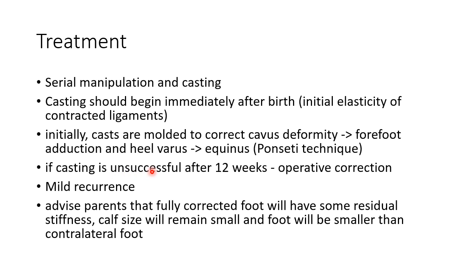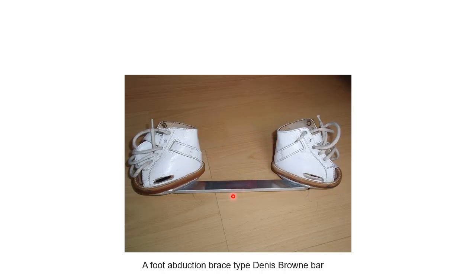If casting is unsuccessful after 12 weeks, we have to perform operative correction. There can be mild recurrence, so we have to advise parents that a fully corrected foot will have some residual stiffness, the calf size will remain small, and the foot will be smaller than the contralateral foot. This picture shows club foot in the course of correction, and this picture shows a foot abduction brace — the Denis Browne bar brace — which is useful after correction of club foot.